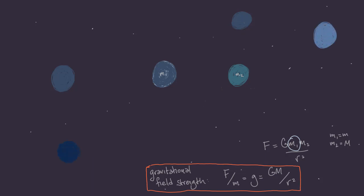For multiple objects, we can vector sum the field from each object individually, and we end up with the total acceleration that an object would experience at any point.